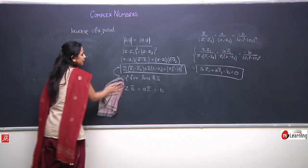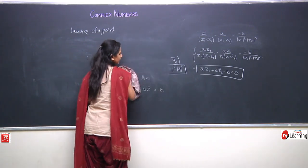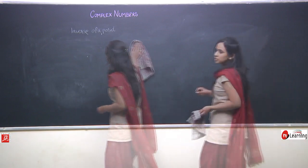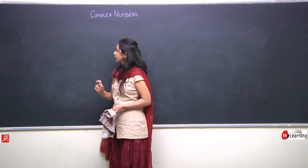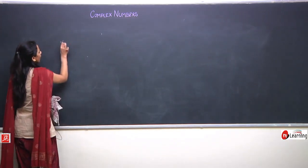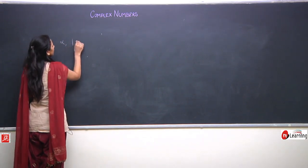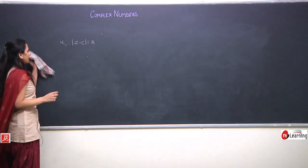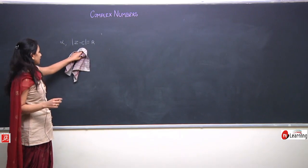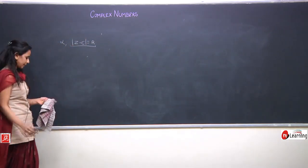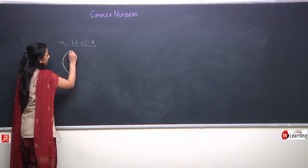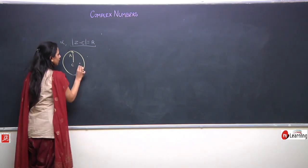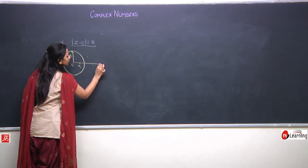Just as we found the inverse of a point with respect to a line, we can also find the inverse of a point with respect to a circle. Let us define and solve: given a point alpha and a circle mod(z minus c) equals r, where c is the center and r is the radius, we need to find the inverse of point alpha with respect to this circle. Let us draw the situation: a circle with center c and radius r, a point alpha inside or outside, and its inverse alpha-dash.